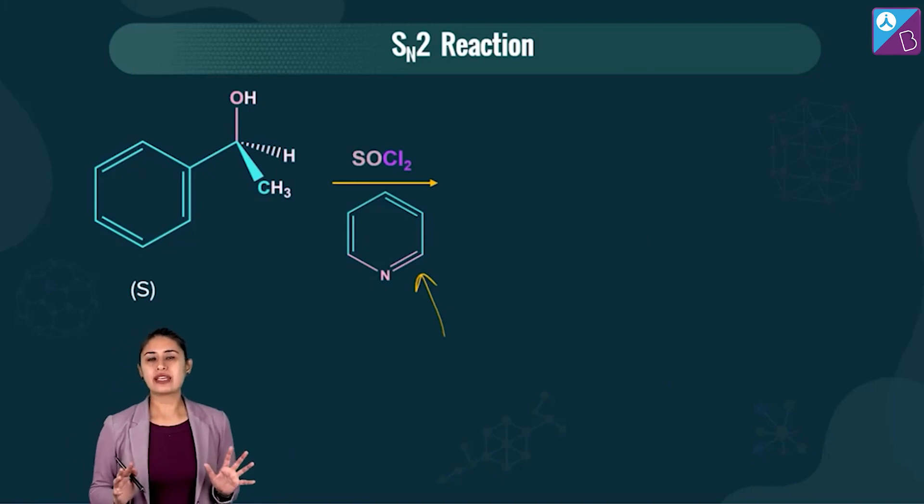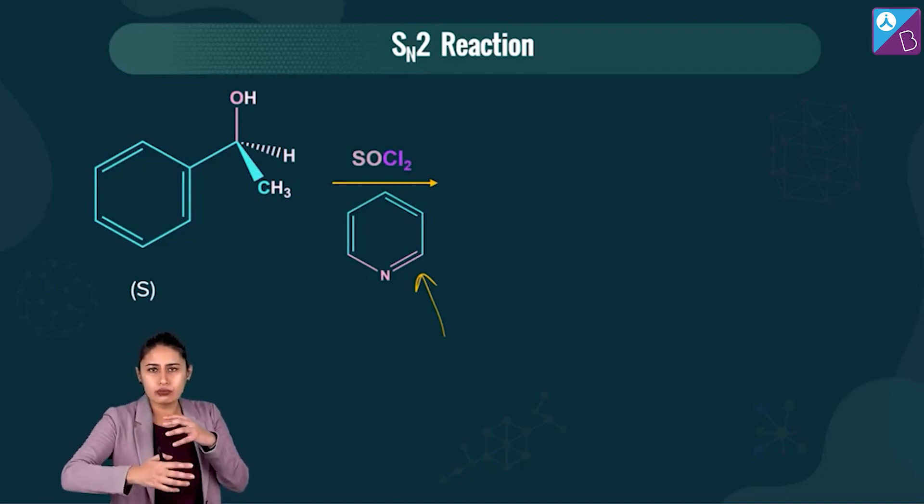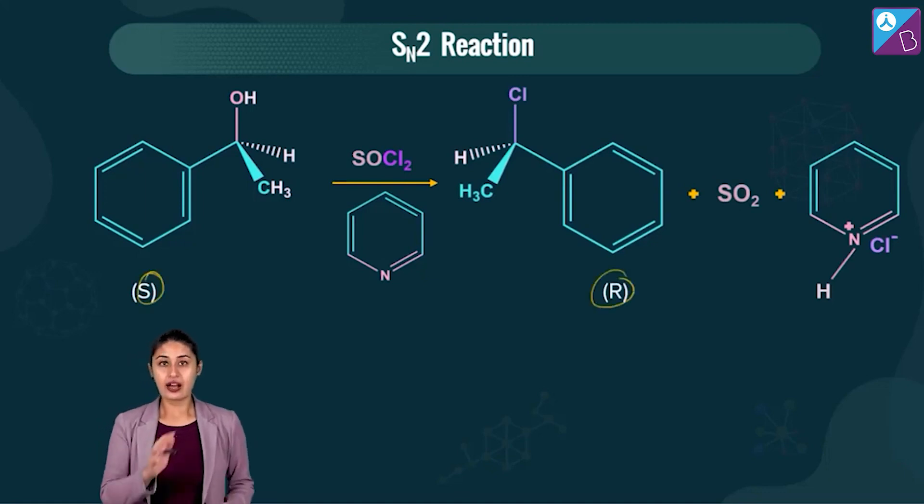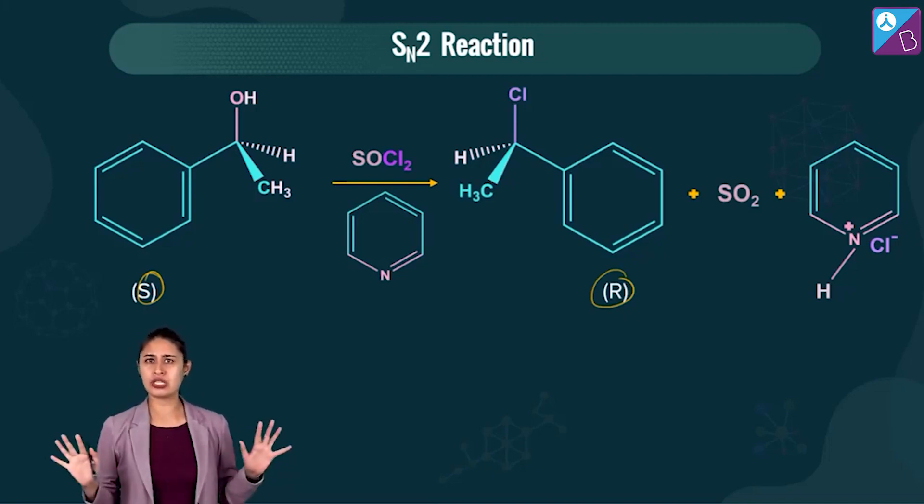Now what happens is the nucleophile which was getting formed intramolecularly is somehow eaten up by this pyridine molecule. So what we also need to know is the configuration is changing and the moment you see a configuration getting inverted, inversion of configuration, now by now SN2 must start clicking the doors. Of course. Inversion of configuration, now we know, yes, we're talking about SN2.